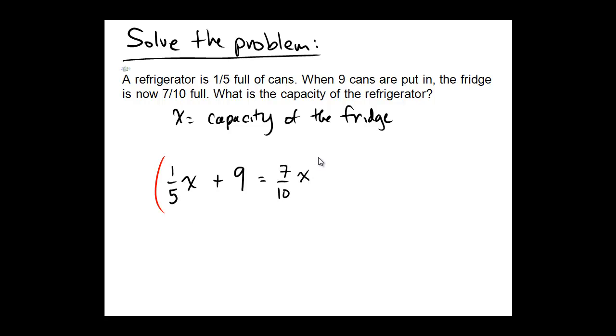The technique I'm going to choose to use here is the multiplication property of equality, multiplying by the least common denominator of all of the fractions. So the only fractions we really see are one-fifth and seven-tenths, although nine is technically nine over one. But the least common denominator, or multiple, of five, one, and ten would be the number ten.